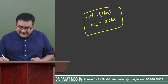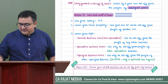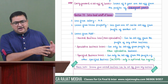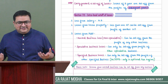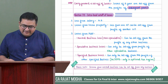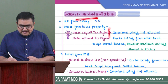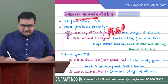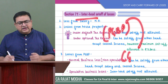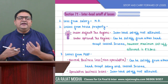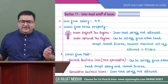Inter-head set-off is like inter-caste marriage — a boy of one caste marrying a girl of another caste. Similarly, in inter-head set-off, the losses of one head are set off from the profits of another head. For example, if there is a loss in PGBP, can it be set off against capital gain? That is inter-head set-off.